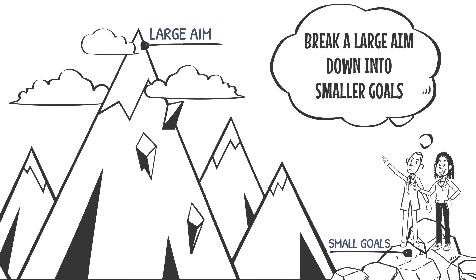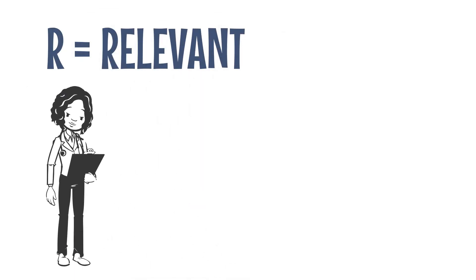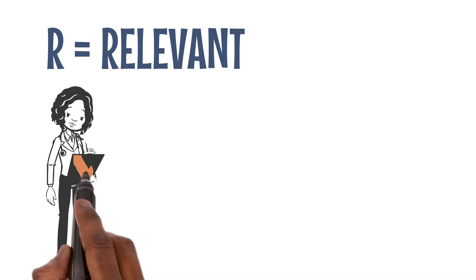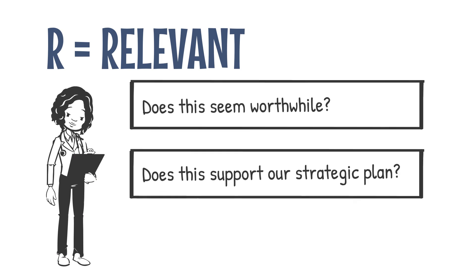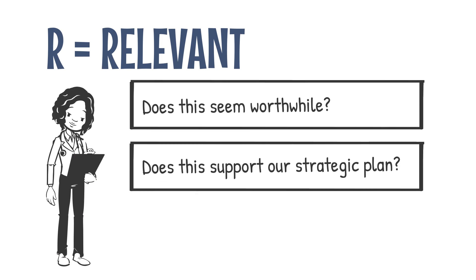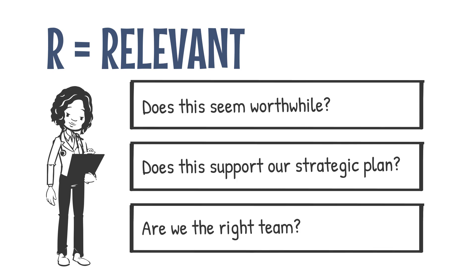R stands for relevant. This step is about ensuring that the aim actually matters to you and your team and that it aligns with other strategic plans and goals. A relevant goal can answer yes to these questions: Does this seem worthwhile? Does this support our strategic plan? Are we the right team for this?